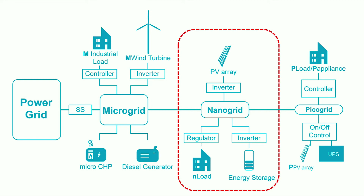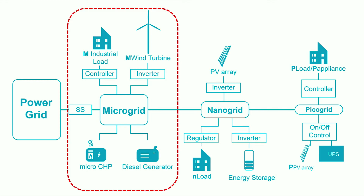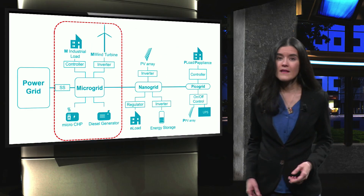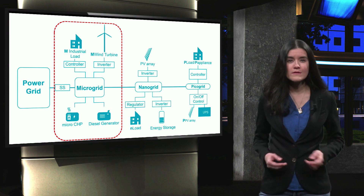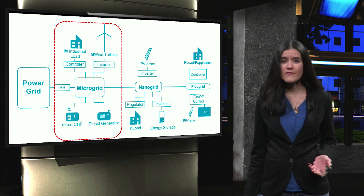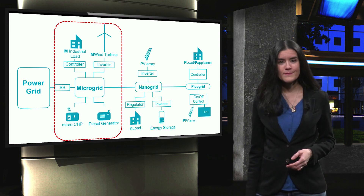A nanogrid is a self-controlled multiport network, which can consist of several households, PV units, and nanoscale energy storage systems. Its size may vary from tens of kilowatts up to a few hundred kilowatts. A microgrid may consist of several nanogrids, as well as other medium-scale components such as micro wind turbines, industrial loads, combined heat and power units, and diesel engines. In this case, the size can vary from a few hundreds of kilowatts to a few megawatts. Note that in many cases the term microgrid encompasses also the concept of picogrids and nanogrids, but sometimes it is useful to classify them this way to accentuate their differences.